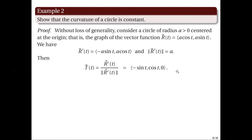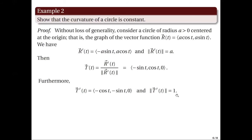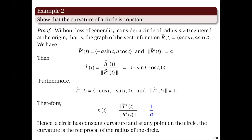Dividing each component by A, the unit tangent vector is (-sin t, cos t, 0). Differentiating further, we get T'(t) with components (-cos t, -sin t, 0). Solving for the norm of T'(t), we get 1. Hence, by the alternative formula, the curvature at any value of the parameter T equals the norm of T'(t) over the norm of R'(t), which gives us 1/A. Therefore, a circle has constant curvature, and at any point on the circle, the curvature equals the reciprocal of the radius. This means that smaller circles have a larger curvature.